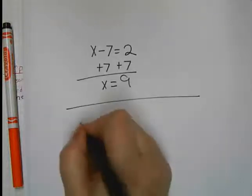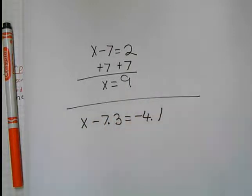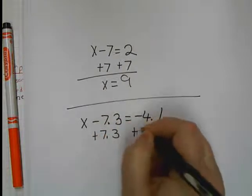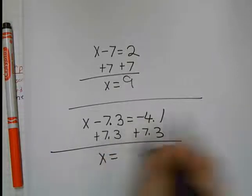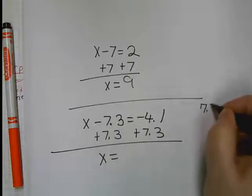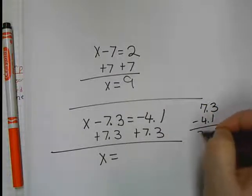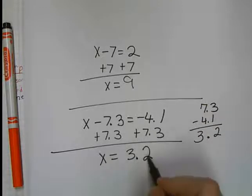You try this one. So, I'm going to add 7.3. X equals. Now, one's negative, one's positive, and that means you subtract them. I'm going to rewrite them. This gives me 3.2. Is it positive or negative? I had more positive, so my answer is positive.